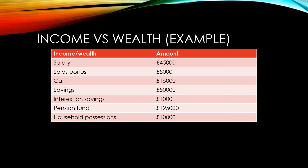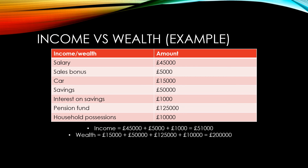So which of these is income and which is wealth? This worker's income is made up of their salary of £45,000, their sales bonus of £5,000, and the interest earned on savings of £1,000, giving a total income of £51,000. Their wealth is made up of the things they own: their car, their savings, the pension fund, and their household possessions — totalling £200,000.